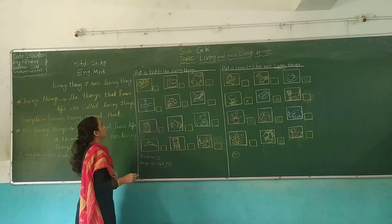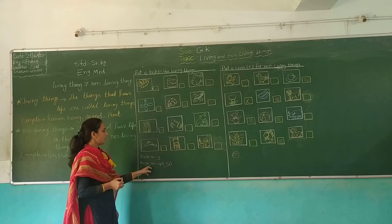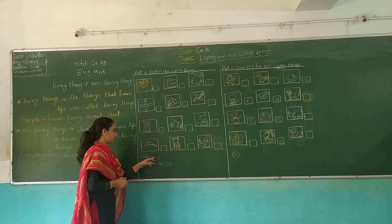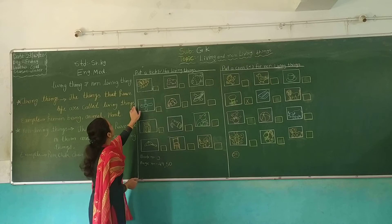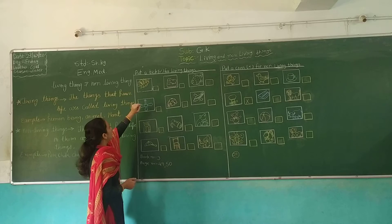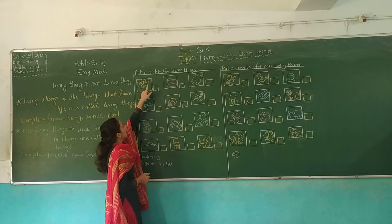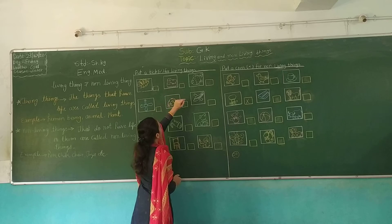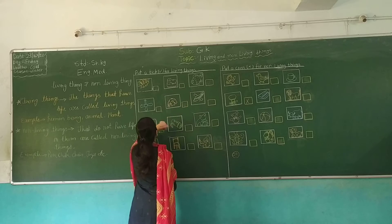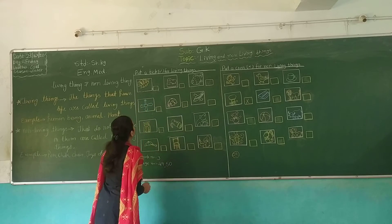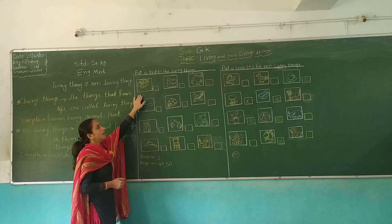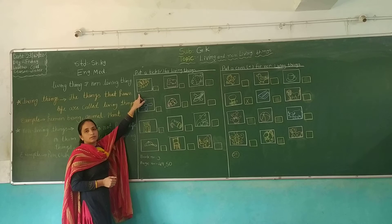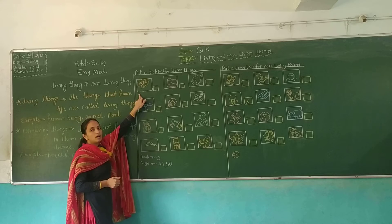Children, look here. Open your book number 3, page number 49 and 50. Put a tick for living things. Which picture is this? Butterfly. Butterfly is a living thing.